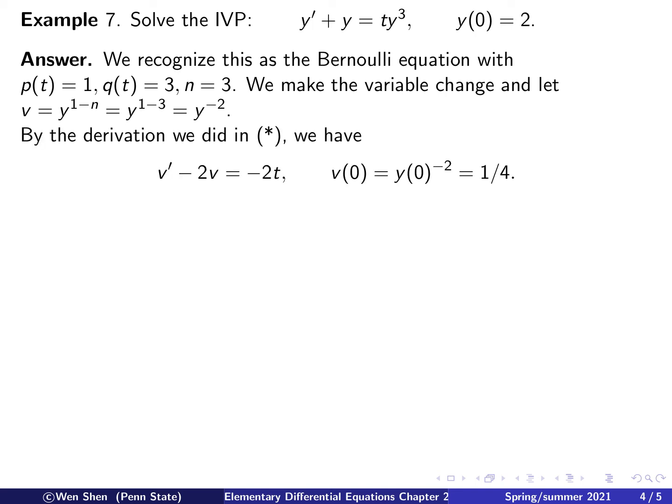One can either quickly do the derivation, which won't take much time, or we can use the final form of our derivation on the previous slide, and we can plug it in. So the equation for v would be v prime minus 2v equals negative 2t. And an additional step we have to be careful here is to put in the correct initial condition. The initial condition for y is given, and we now have to find out what is the initial condition for v. So v(0) will be y(0) to the power negative 2. Plug in the y(0) value, I get 1 over 4.